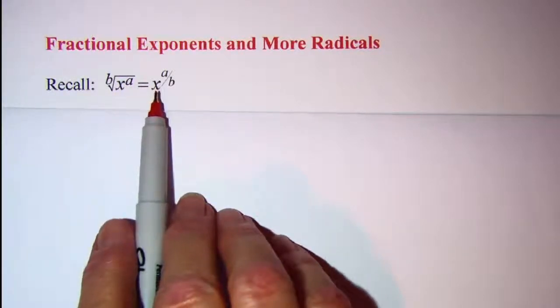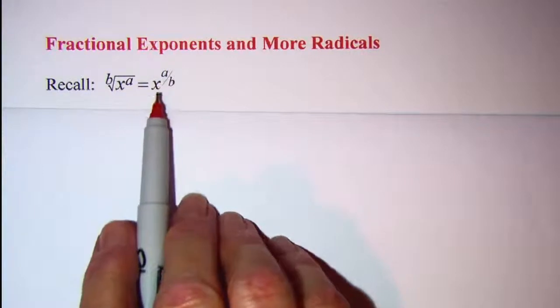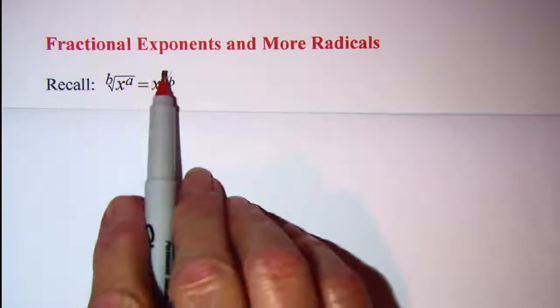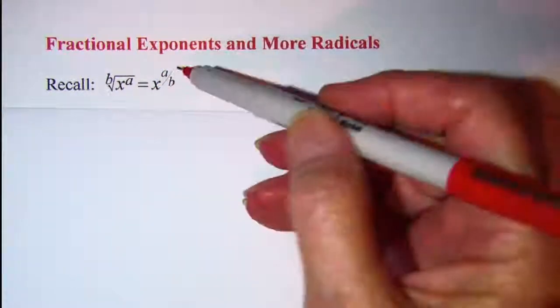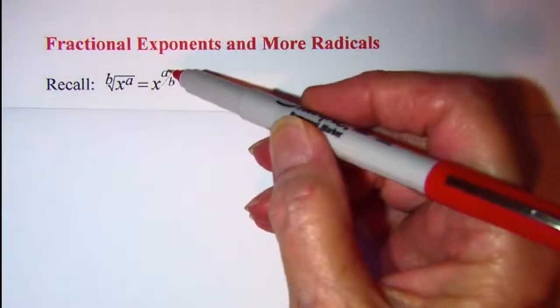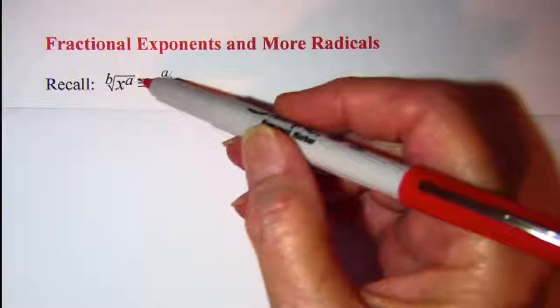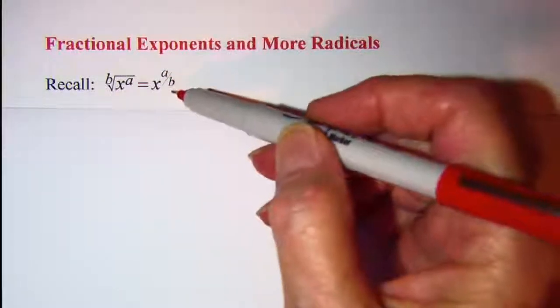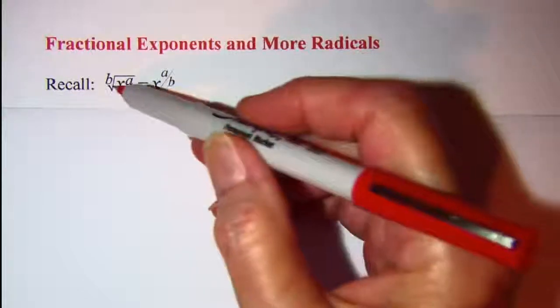you can write this as the base of x, which is the same base here, and the exponent has the numerator as the exponent on the radicand and the denominator as the index on the radical.